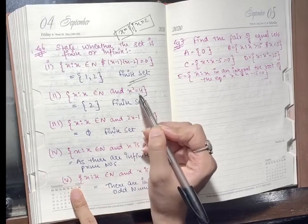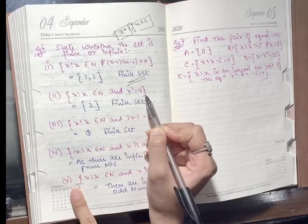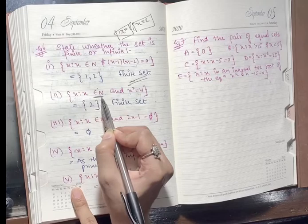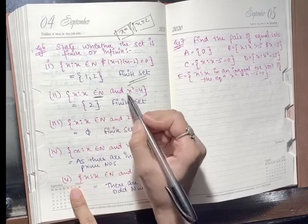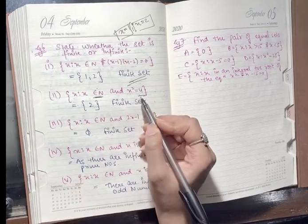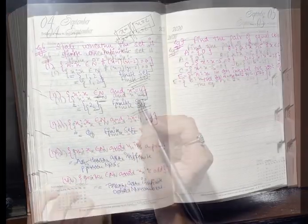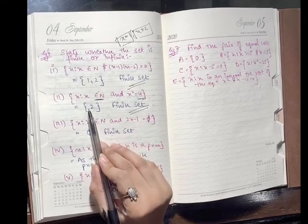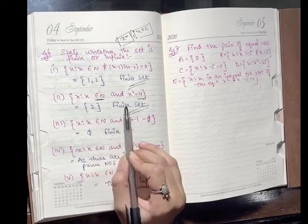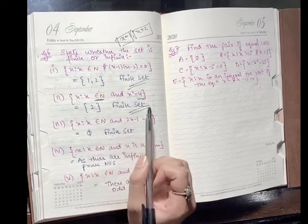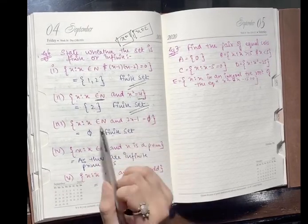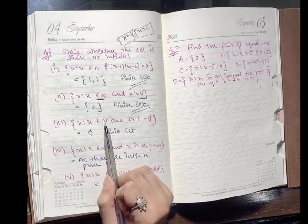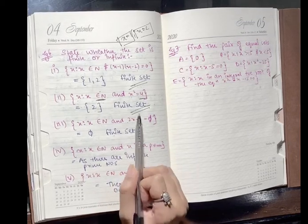Next: x is such that x belongs to the natural numbers and x squared equals 4. It must belong to natural numbers and its square must be 4. There is only one such number, which is 2. So this also becomes a finite set.